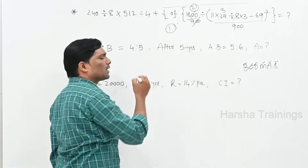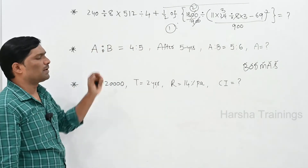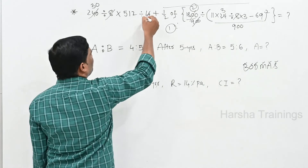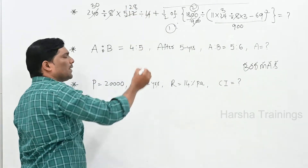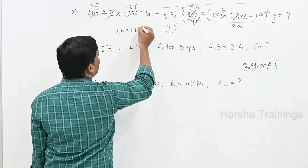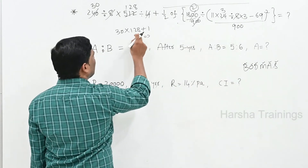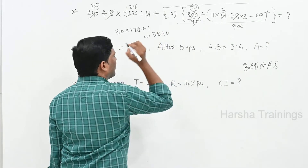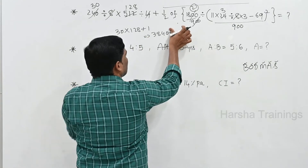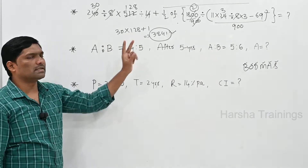The total part answer is 1. Now for the remaining part, first preference is Division: 240 divided by 8 equals 30, and 512 divided by 4 equals 128. Then the remaining final step: 30 into 128 plus 1 equals 3840 plus 1, so the final answer is 3841.